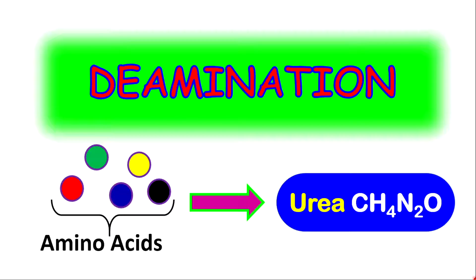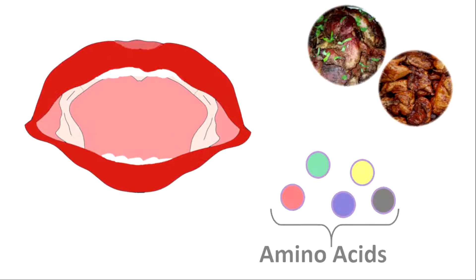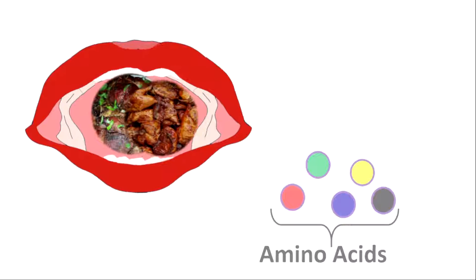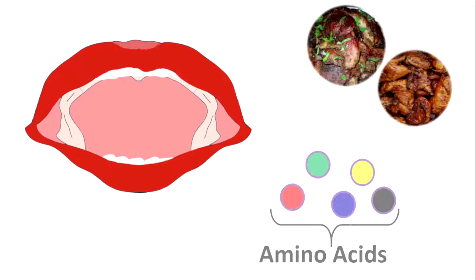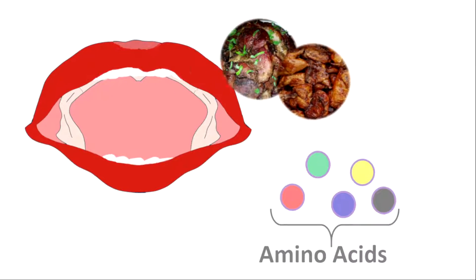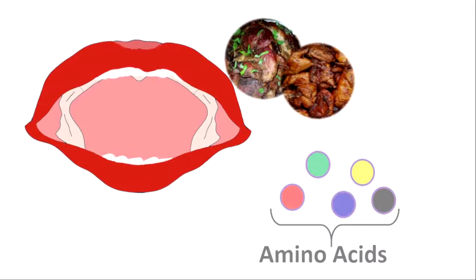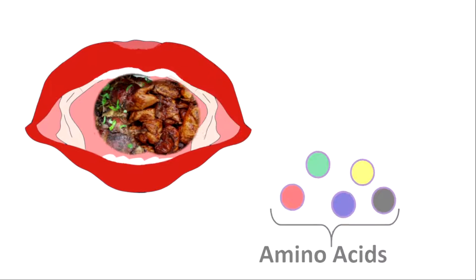Welcome back to another learning series with Mr. Knight. Today we're going to focus on deamination. When proteins are eaten and digested, a lot of amino acids are produced. Sometimes the amino acids are produced in excess. Anything that is produced in excess within the body, the body will get rid of it to maintain homeostasis.